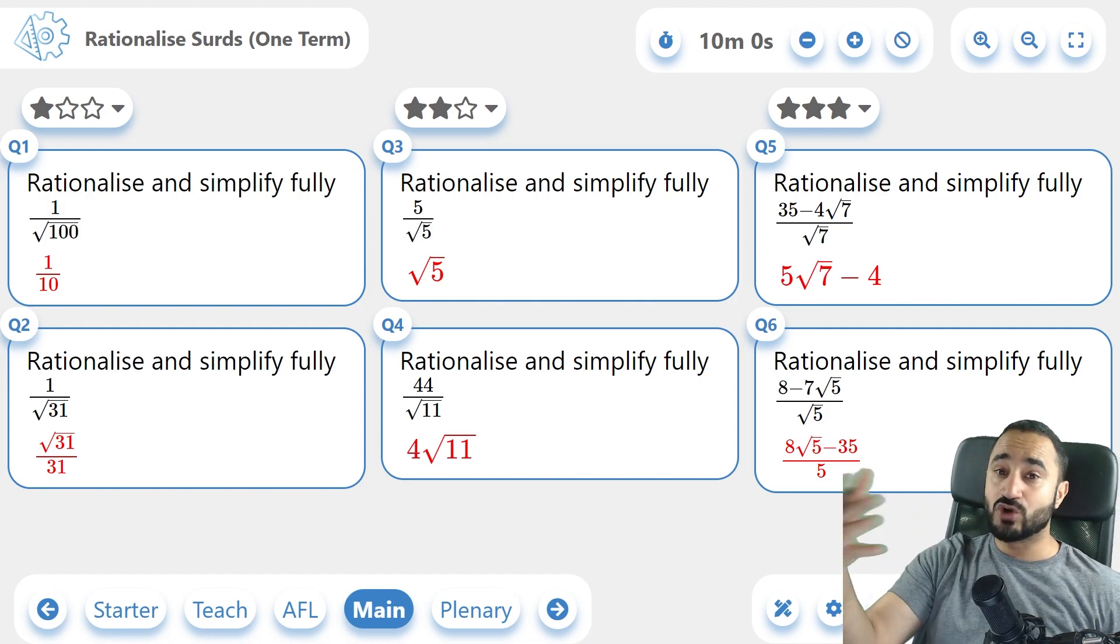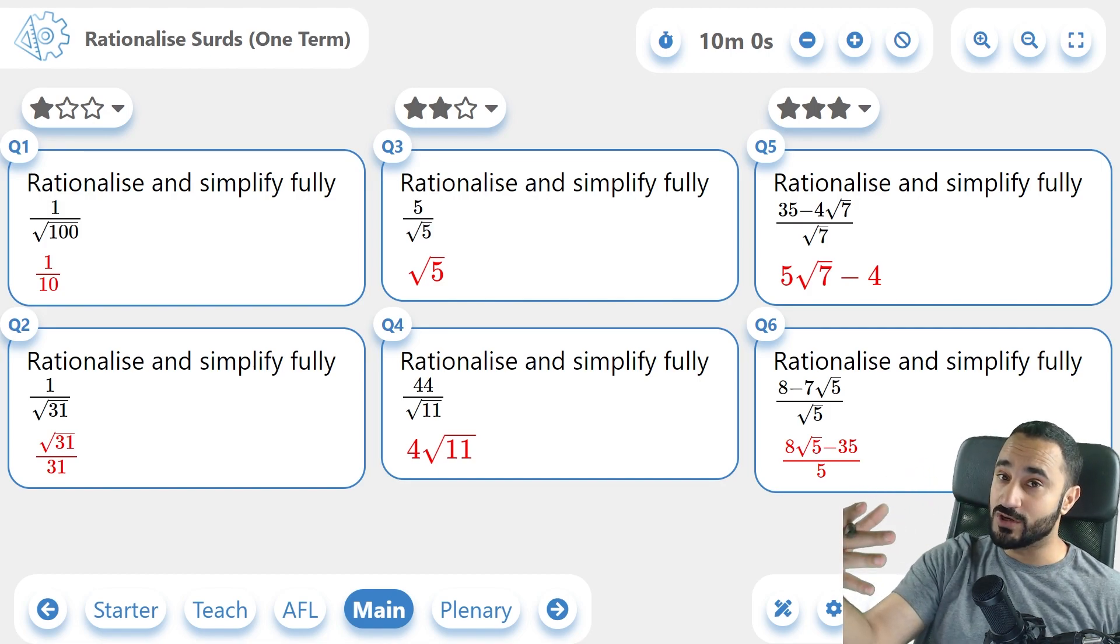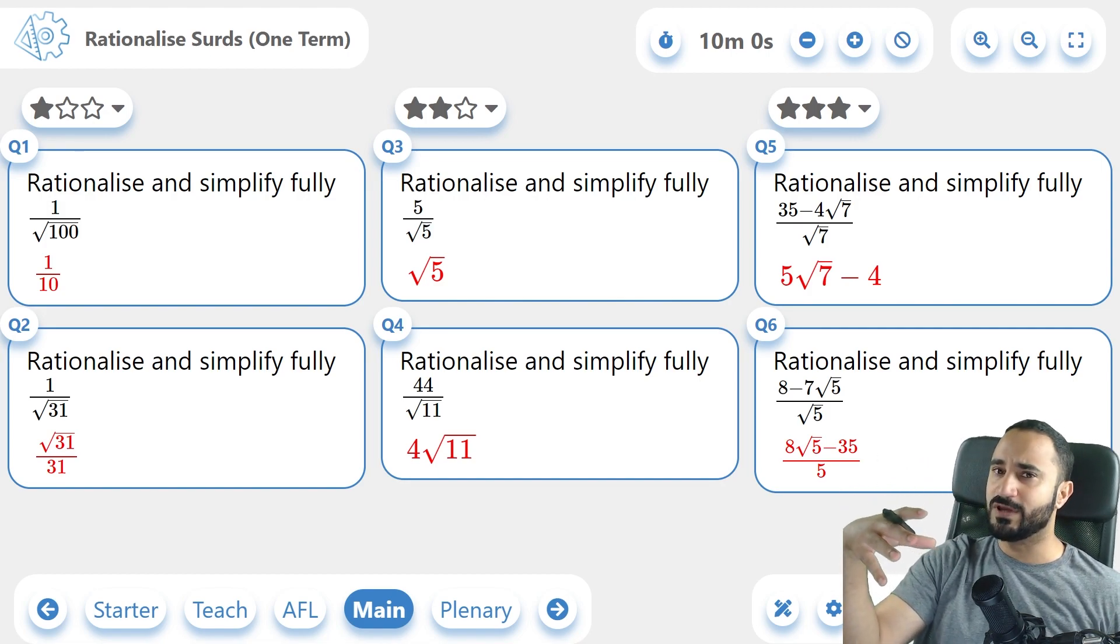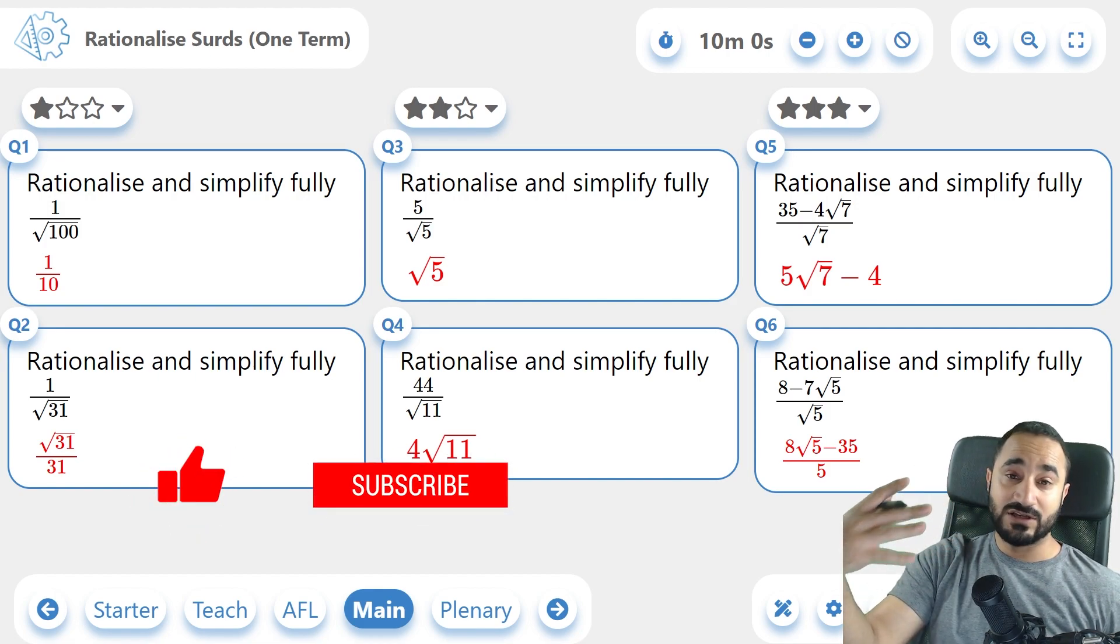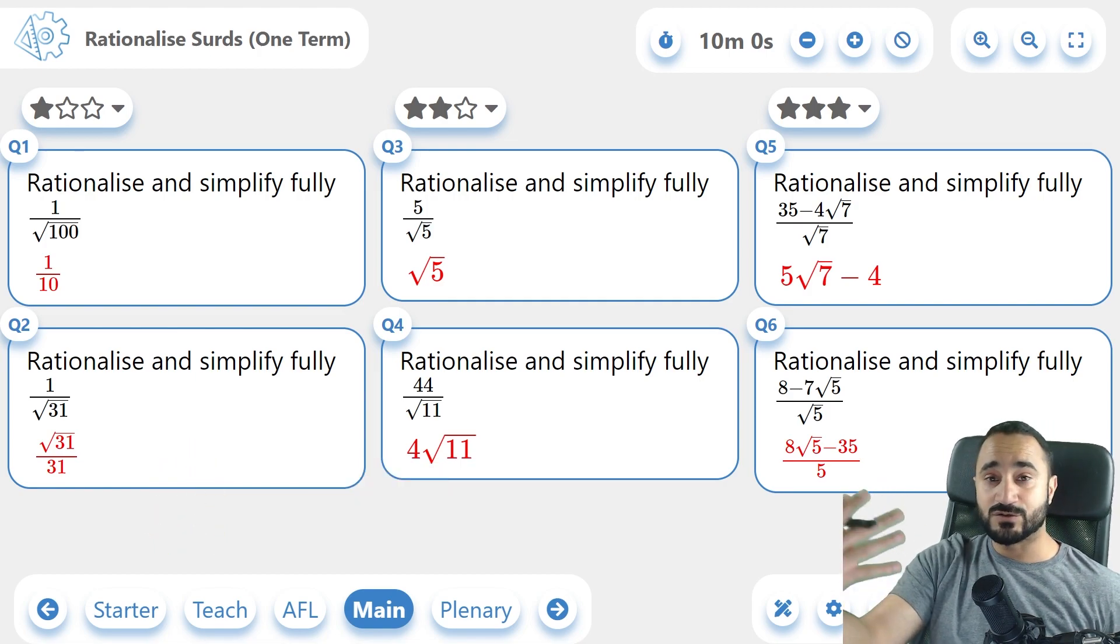And that's it for our lesson on rationalizing surds with one term. Be sure to check out the next lesson, which is rationalizing surds with two terms, which is more difficult than this topic. And if this lesson helped you out in any way, please be sure to leave a like and subscribe. It would really help me out tremendously. Thank you guys. And I'll see you in the next video.